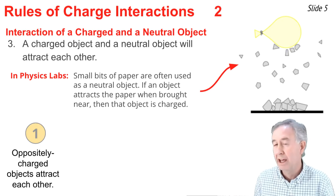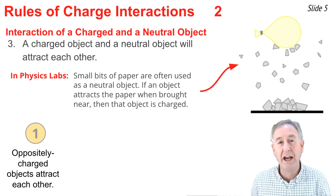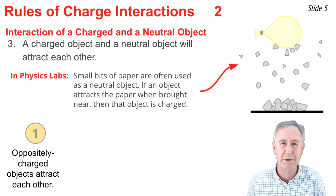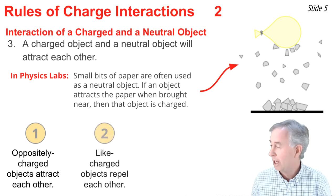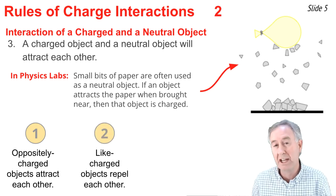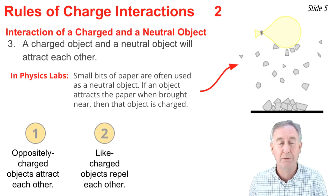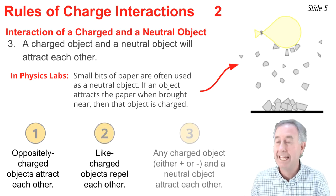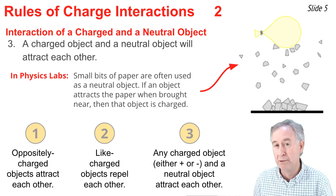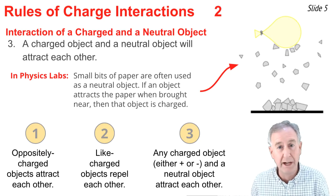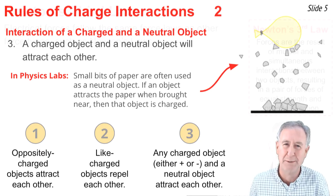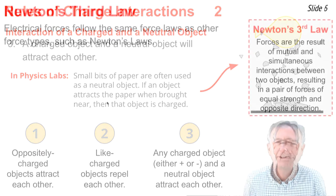We now have three charge interactions. Objects with the opposite type of charge will attract one another. Objects that have the same type of charge will repel one another. And any charged object — whether positive or negative — and a neutral object will attract one another.